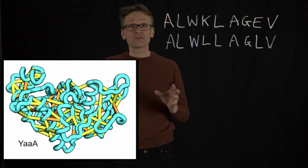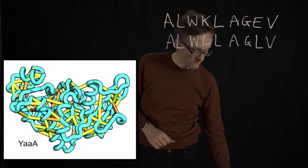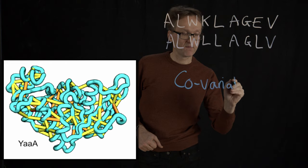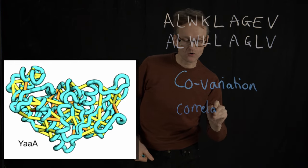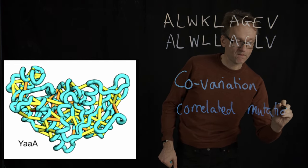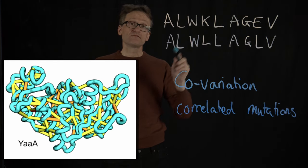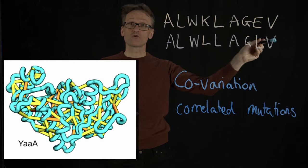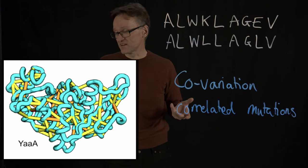If we just look at alignments here, it turns out this is very common. We have so-called co-variation, or alternatively, we call them correlated mutations. The idea is that if two positions in the sequence always correlate, they are likely to be close to each other in sequence. That's a very simple explanation.